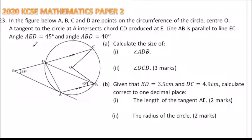This is question number 23, 2020 KCSE Mathematics Paper 2. In the figure below, A, B, C, and D are points on the circumference of the circle, center O. A tangent to the circle at A intersects chord CD produced at E. Line AB is parallel to line EC. Angle AED is equal to 45 degrees and angle ABD is equal to 40 degrees.